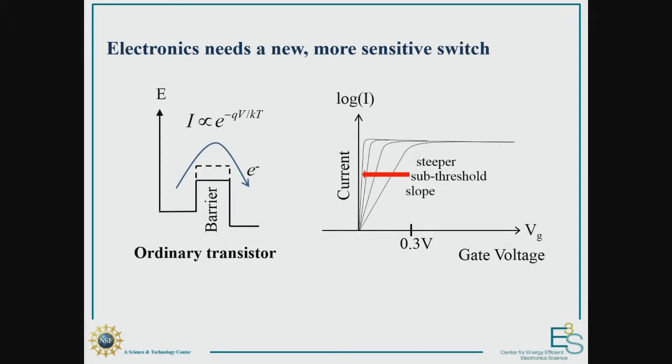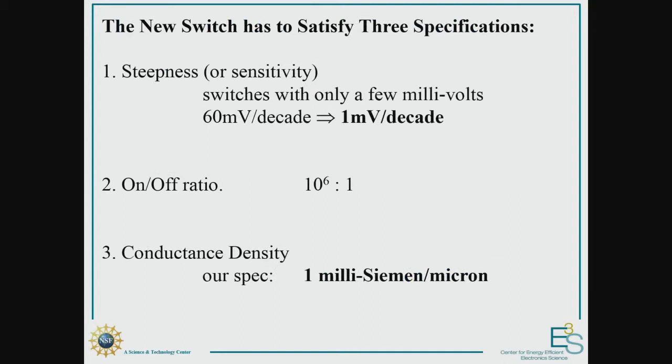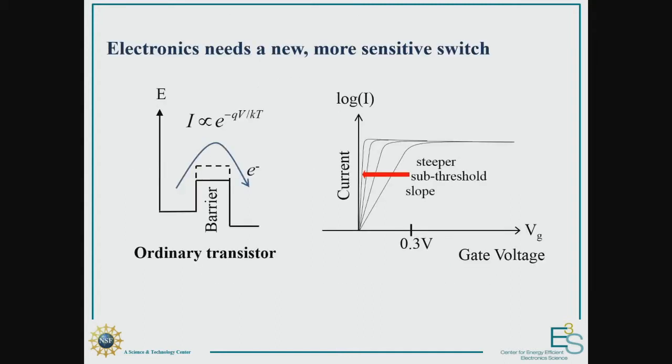So in an ordinary transistor, the gate applied voltage modulates the height of this energy barrier, and the current is given by the number of electrons that are thermally excited over that barrier, which gives us the thermal slope of 60 millivolts per decade. And if we combine that with the required six or so decades of current needed to turn off the device, that gives us a minimum operating voltage of about 0.3, actually closer to 0.4 volts. And today, the actual voltage is probably more like one volt. But there's no fundamental reason why we can't operate with a much lower voltage, saving